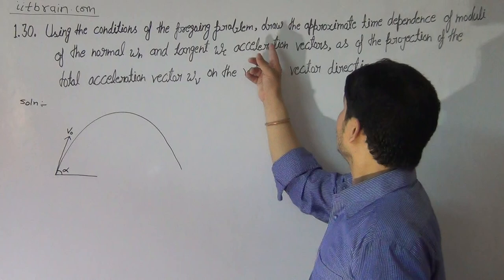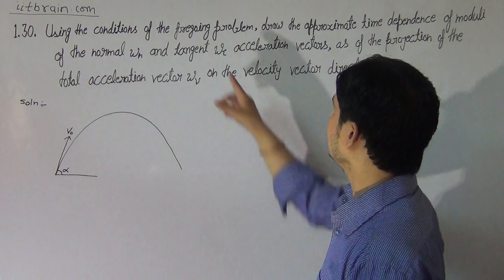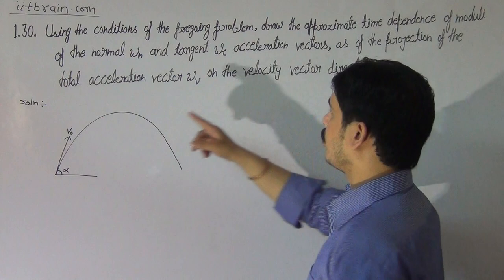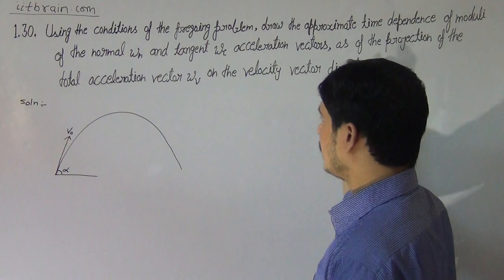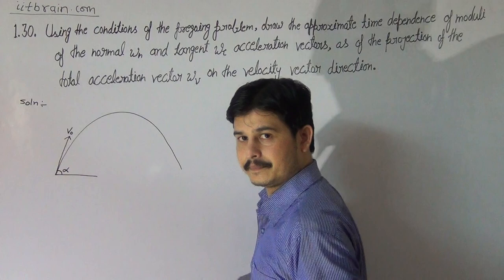Draw the approximate time dependence of modulus of normal acceleration and tangential acceleration vectors, and of the projection of the total acceleration vector on the velocity vector direction. V-naught is the initial velocity and alpha is the angle from the horizontal.